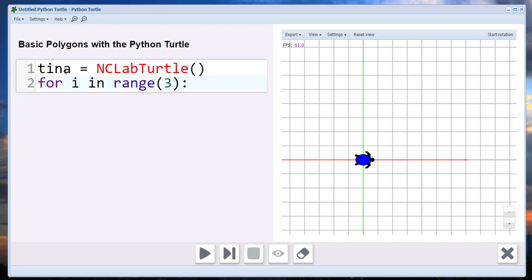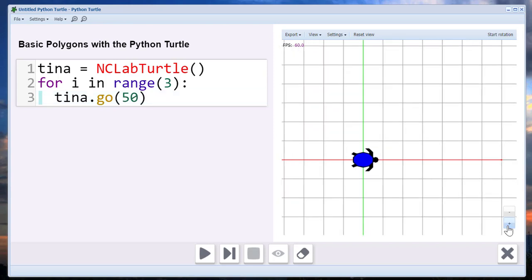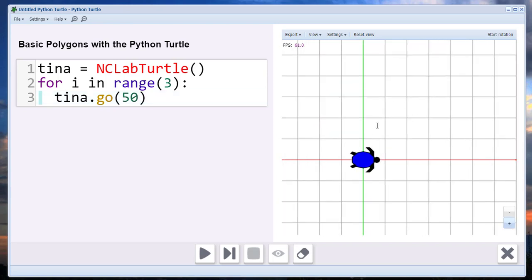What I've done here is I've set up my for loop, and I am going to set a range of three so it's going to loop three times. The first thing I'm going to do is have Tina go 50 steps. By 50 steps, if we enlarge this a little bit here, each one of these intervals is 10 steps, so she's going to end up moving five squares.